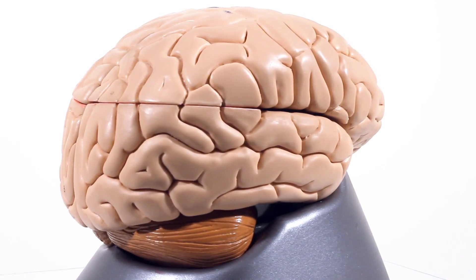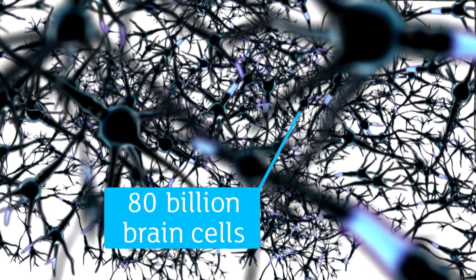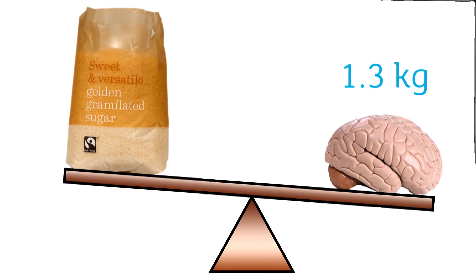So this is our brain, and it's absolutely amazing. There are 80 billion brain cells tucked in here, and it weighs just a bit bigger than a bag of sugar, about 1.3 kilos.